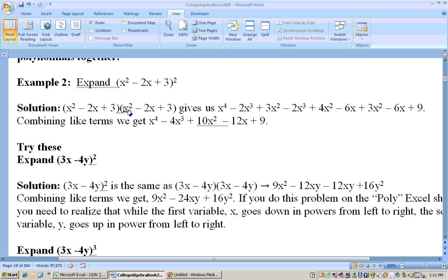So we'd have to take the x squared through all this. Then we have to take the minus 2x through all this. And then the plus 3 through all this. And you get this huge thing right here. And when you combine like terms, then you end up with that polynomial right there.